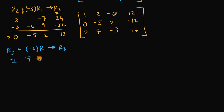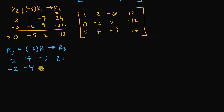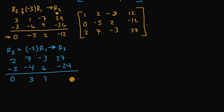Our third row is 2, 7, negative 3, and 27. Negative 2 times row 1 gives us negative 2, negative 4, 6, and negative 24. Adding these two rows together, we get 0, 3, 3, and 3. Well, that's kind of nice! So let's go ahead and rewrite this matrix.